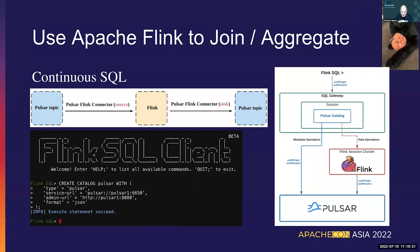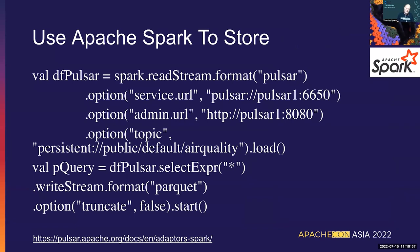Flink is great for joining different streams together — maybe joining the air quality stream from different countries into one global stream, or mixing air quality and weather, joining on city and time. Even in real-time applications, knowing SQL is important. In Spark, the code is pretty boilerplate: you paste it in, get data from a Pulsar topic, change your topic name, and output to a Parquet file — which any data engineer would be happy to get. You've created a powerful application without much heavy lifting.